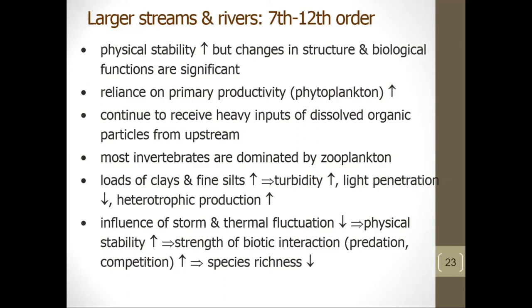Larger streams and rivers of seventh- to twelfth-order increase in physical stability but undergo significant changes in structure and biological function. They develop increased reliance on primary productivity by phytoplankton but continue to receive heavy inputs of dissolved and ultra-fine organic particles from upstream. Invertebrate populations are dominated by fine particle collectors, including zooplankton. Larger streams carry increased loads of clays and fine sediments, which increase turbidity, decrease light penetration, and increase the significance of heterotrophic processes. Reduced storm events and thermal fluctuations increase overall physical stability, which strengthens biological interactions like competition and predation, tending to reduce species richness.